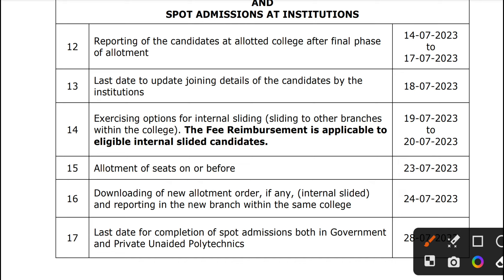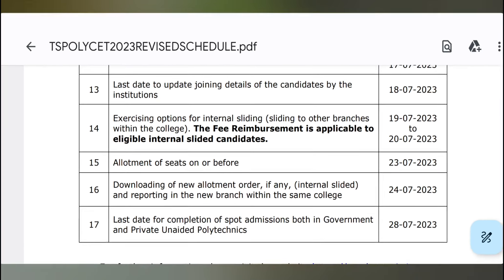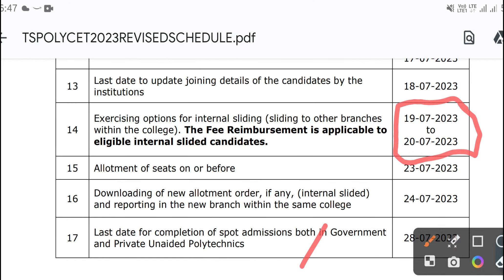Exercising options for internal sliding. If you are interested in the second phase allotment, after the third phase part admissions, you will see the date here.